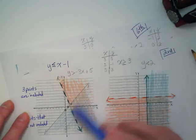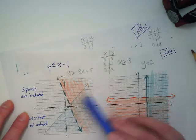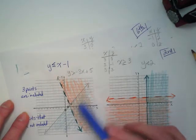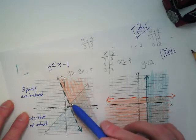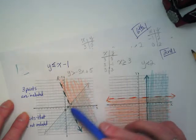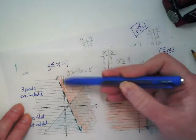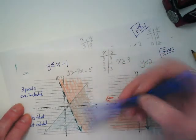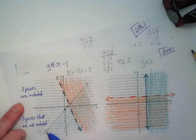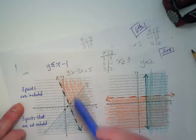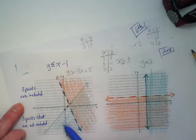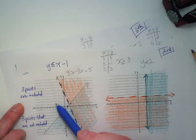So all of the ones that are included in this are going to fall in this double shaded region, and they might also fall on this solid line, but they will not fall on the dashed line. Any that are not included are going to fall in either a single shaded region or the non-shaded region.